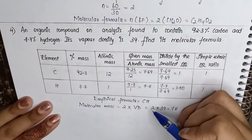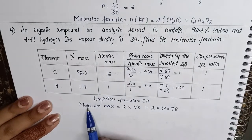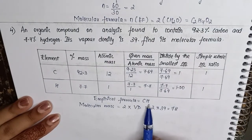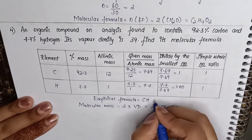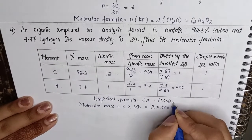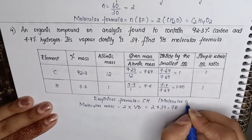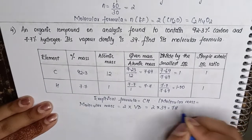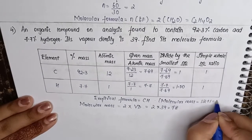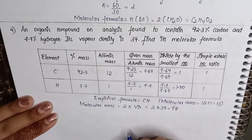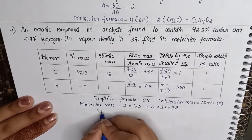Now to calculate the molecular formula we need to find out the molecular mass of the empirical formula. So here the molecular mass of the empirical formula is equal to 1 carbon and 1 hydrogen, so 12 plus 1, which is 13.